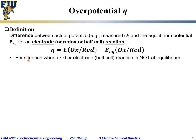It is a potential difference and it applies only for the situation when the current is not zero — when the net current for that half-cell reaction is not zero. When the current is not zero, the electrode reaction is not at equilibrium, because if it were at equilibrium the net current would be zero. So overpotential only applies when that half-cell or electrode reaction is not at equilibrium.